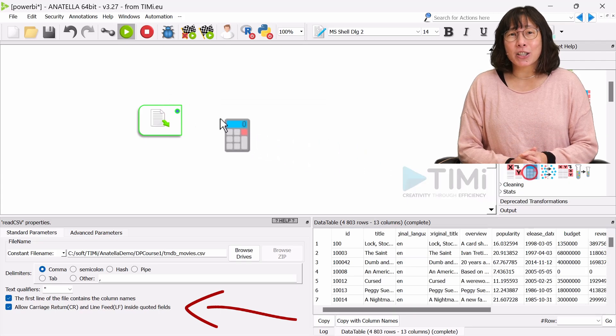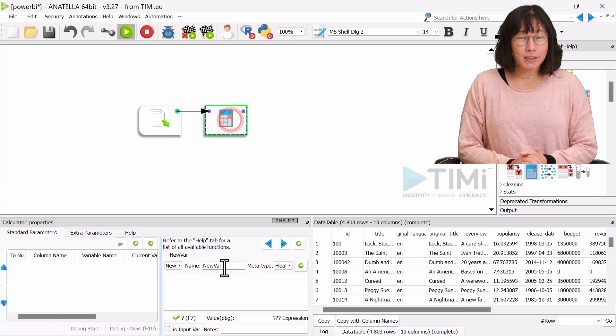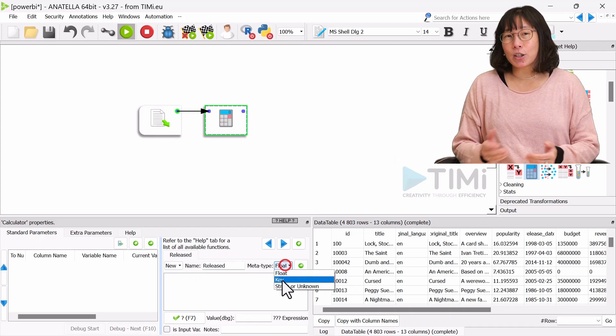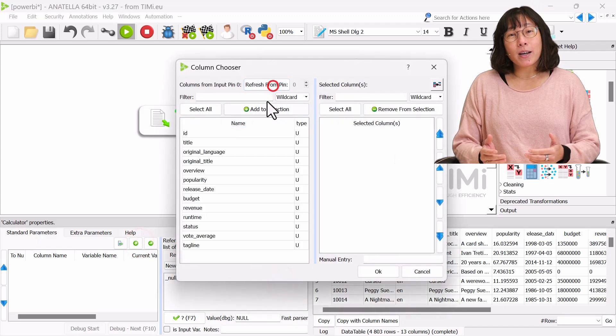Let's place it on the canvas and ensure that the option 'allow carriage return inside quoted fields' is selected. Now, let's create a boolean calculated field called released. It will be one if the status equals release; otherwise, it will be zero.